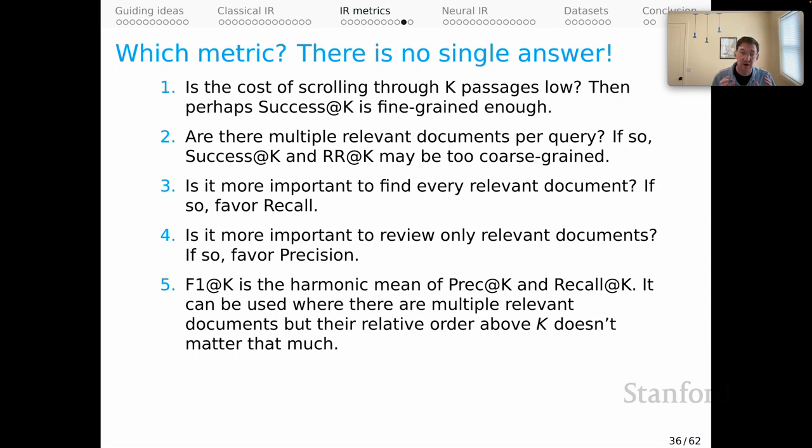F1 at k is the harmonic mean of the precision and recall values at k, and that can be used where there are multiple relevant documents, but their relative order above k doesn't matter that much, and so you've decided to balance precision and recall.